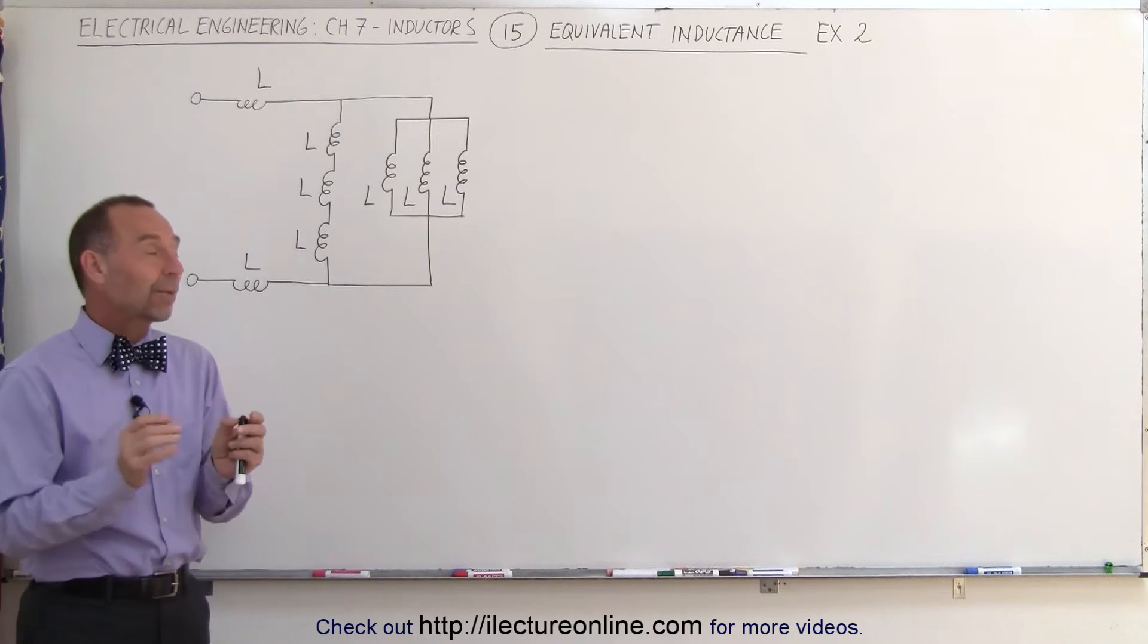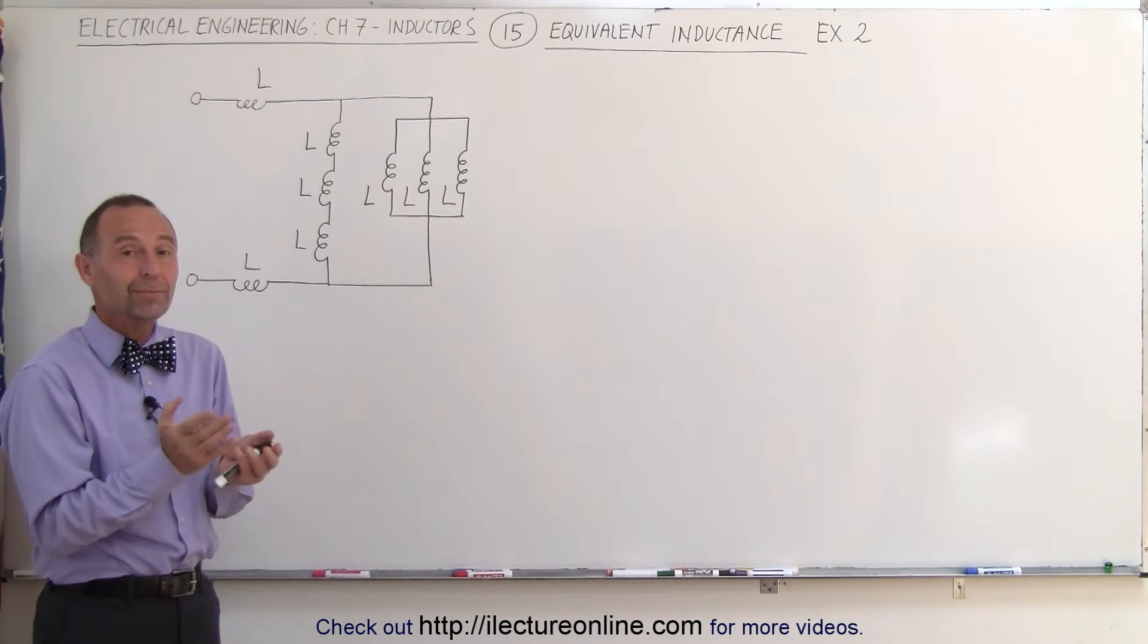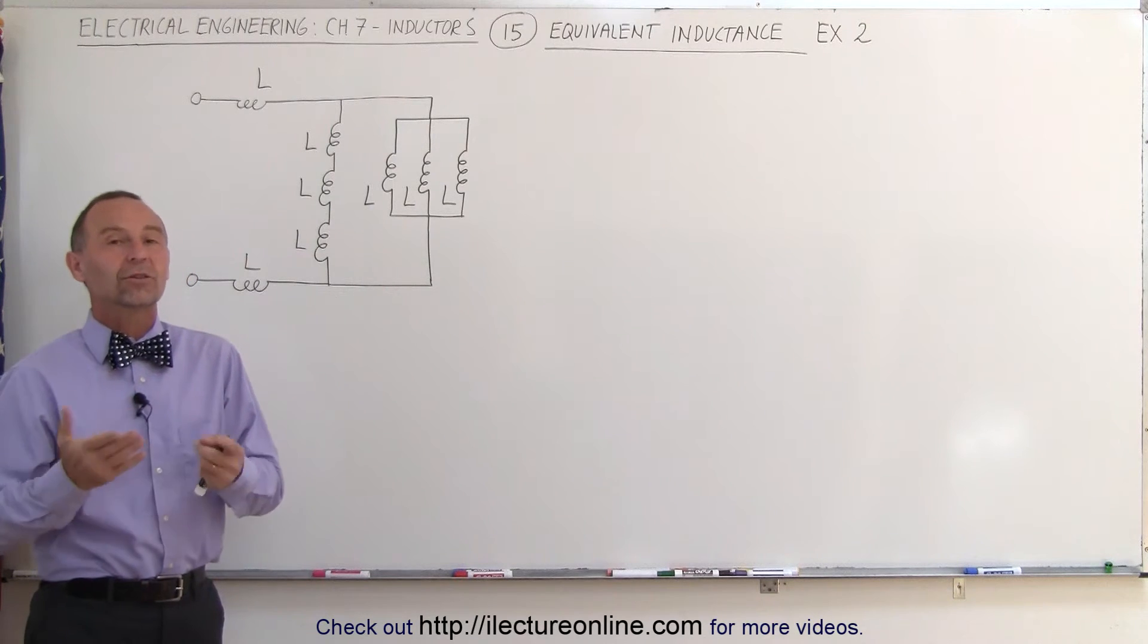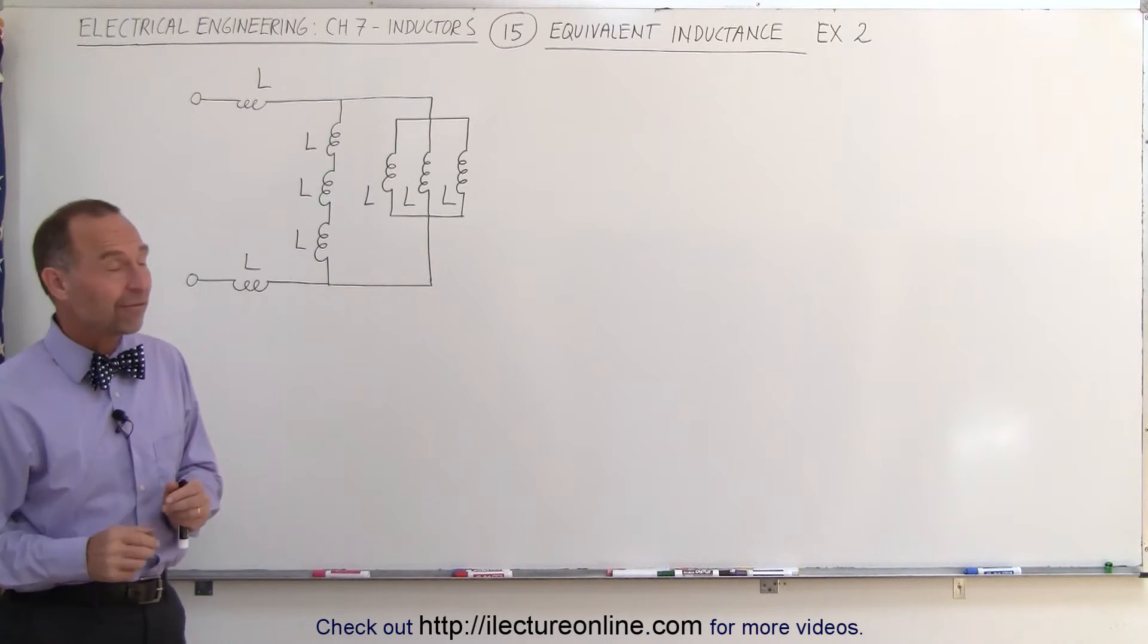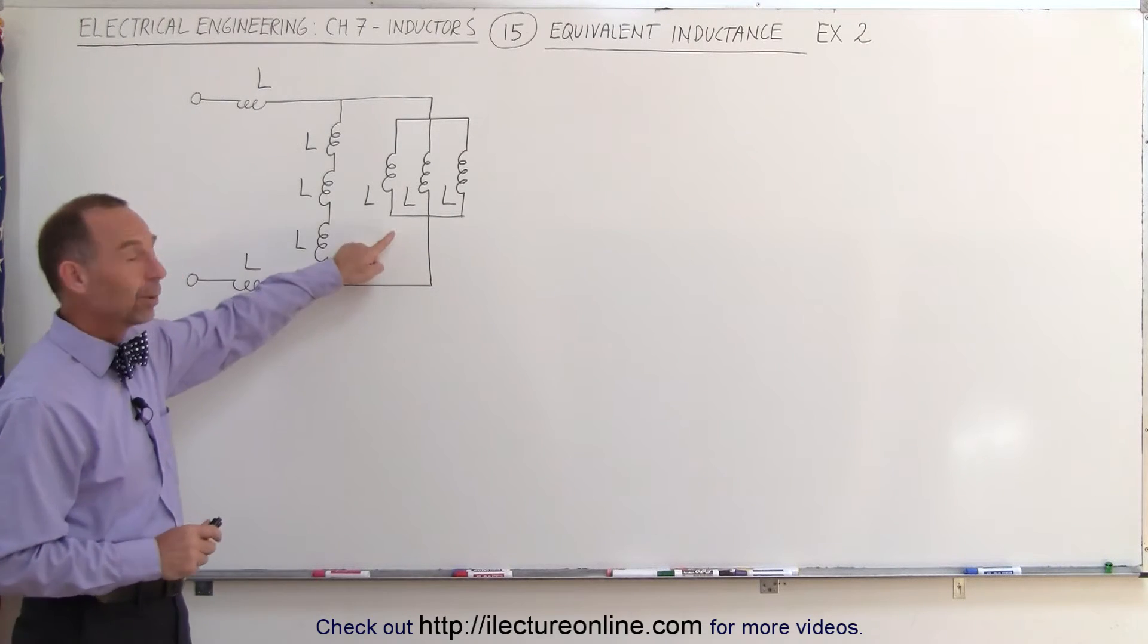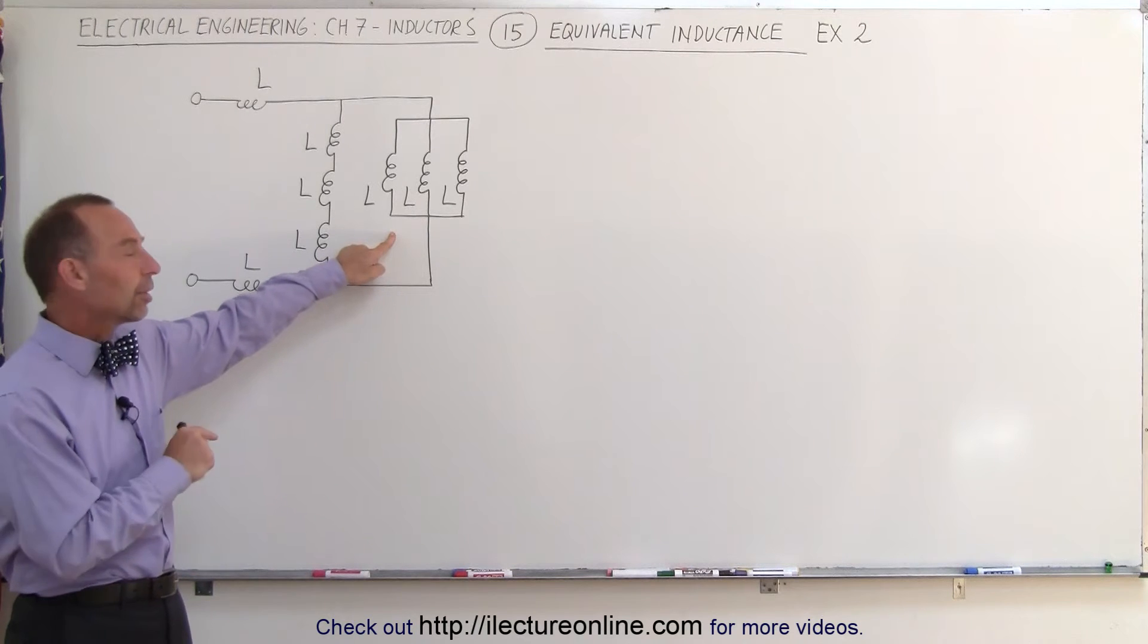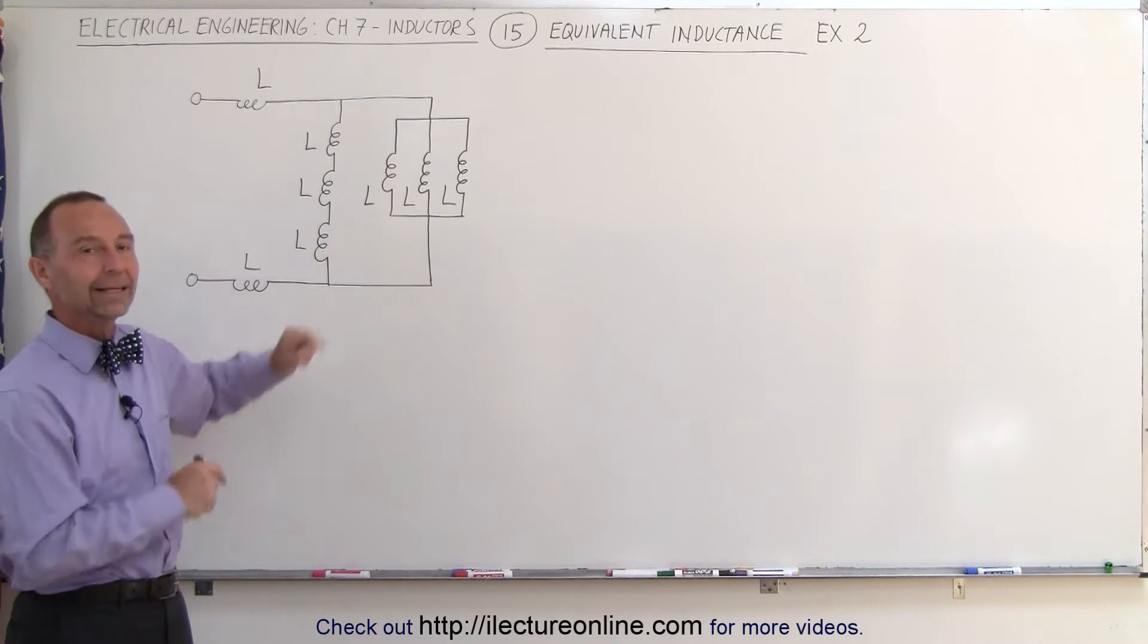We already know the trick when we have two inductors in parallel. Simply the equivalent inductance of two inductances in parallel is simply half the inductance of either one of them, if they're the same value of course. And in the case when there's three of them, the equivalent inductance is one third L in this case.